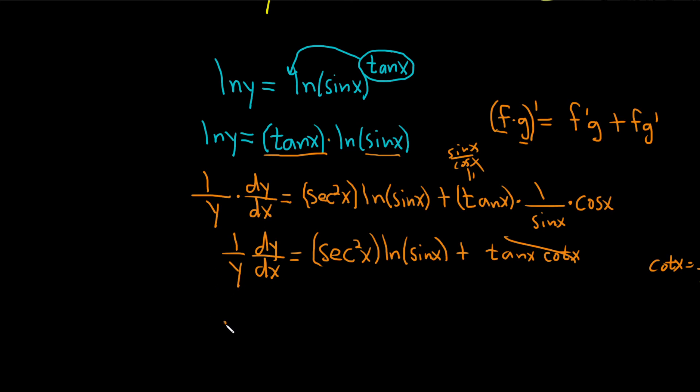And let's just go ahead and multiply by y now. So, we have dy dx equals y, I'll use a bracket, put a y here, put a y here, okay? So, that'll give us parentheses, secant squared, x, natural log of the sine of x, plus 1.